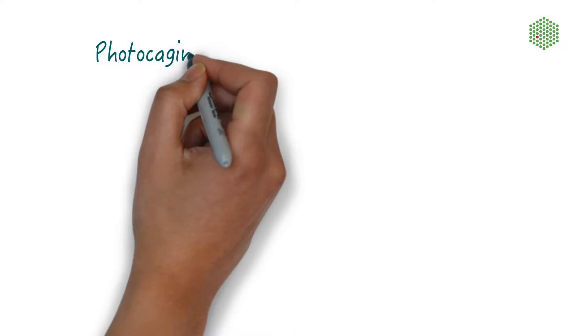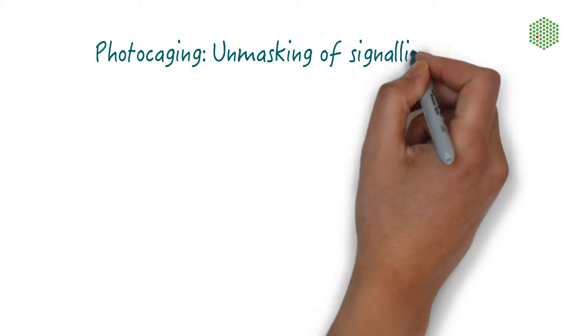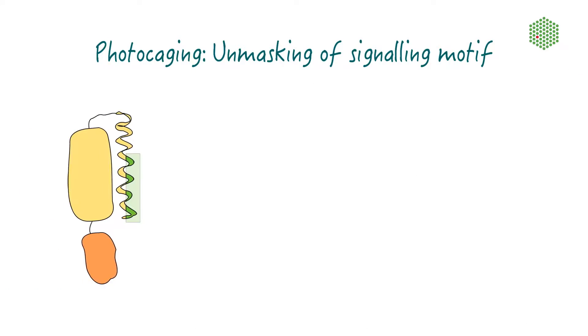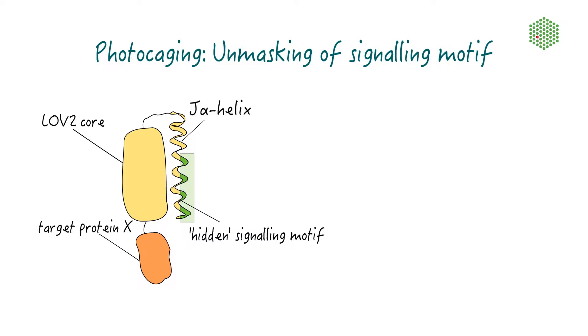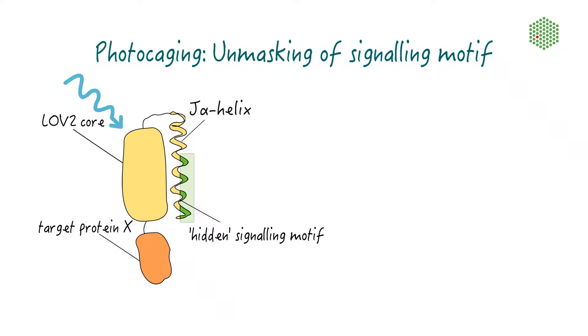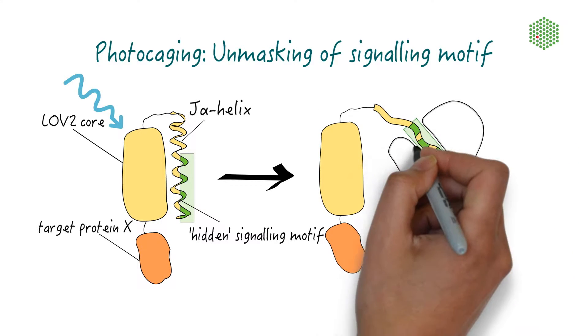Photocaging can also be used to unmask a short signaling motif. In this case, the J-alpha helix of a LOV2 domain is engineered to contain a sequence motif that is hidden in the dark. When exposed to blue light, the helix unfolds and presents the sequence motif, enabling other proteins to bind to the target protein.